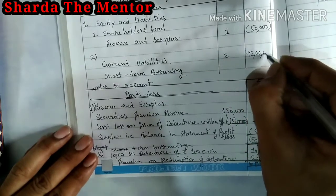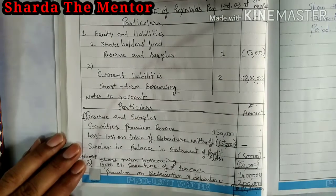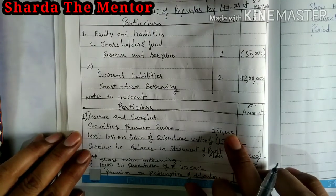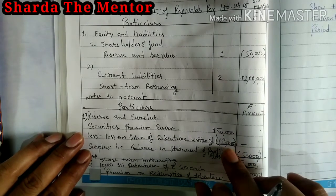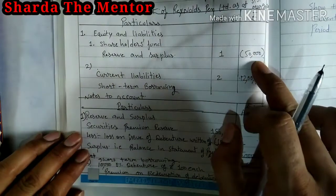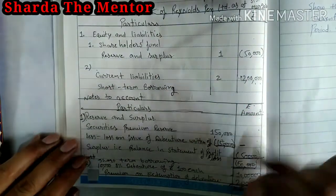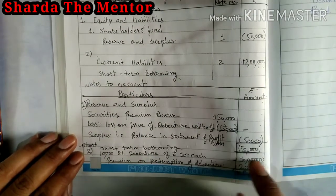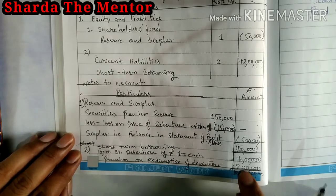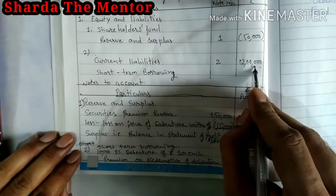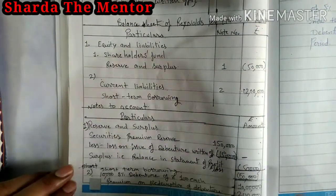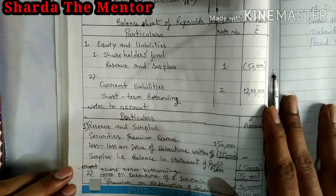In Short-term Borrowings the amount is ₹12 lakh, which you will mention under Current Liabilities in the balance sheet. So in Current Liabilities, Short-term Borrowings = ₹12 lakh. In that way you prepare the balance sheet. First prepare Notes to Accounts: Note 1 has security premium reserve of ₹1,50,000 with ₹1,50,000 written off, leaving ₹50,000 in Statement of Profit and Loss as a negative amount. Note 2 has 10,000 debentures at ₹10 lakh plus ₹2 lakh premium = ₹12 lakh in short-term borrowings. Always prepare notes first, then transfer amounts to the balance sheet. In the next video we will cover the next topic.